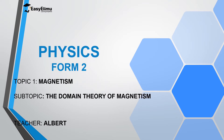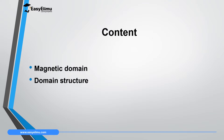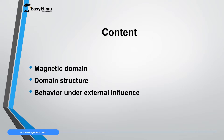In this lesson we are going to discuss the domain theory of magnetism. This is a theory which explains why magnets are magnets, why magnetic materials are attracted by a magnet, and why non-magnetic materials are not attracted by a magnet. By the end of this lesson I expect you to be able to explain what a magnetic domain means, explain the domain structure, and explain the behavior of materials under external influences like temperature and magnetic fields.